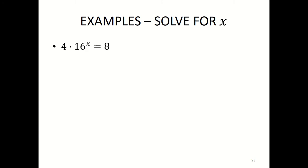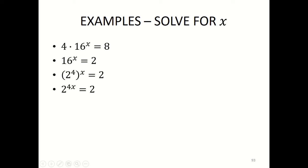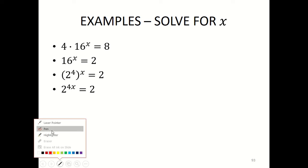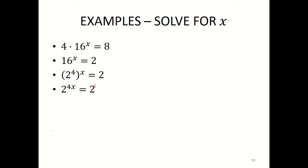Here's another example where I have 4 times 16 to the exponent of x equals 8. I will first start by dividing both sides by 4. I will be left with 16 to the exponent of x on the left-hand side equals 2. Simplify that 16 to the simplest exponential form — prime factorize it, it will be 2 to the exponent of 4, to the exponent of x. Multiply 4 with x, you will have 2 to the exponent of 4x equals 2. The 2 on the right-hand side has an exponent of 1, so 4x equals 1, and x equals a quarter.